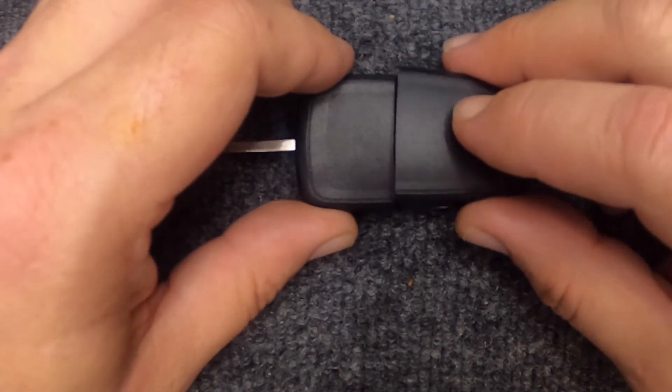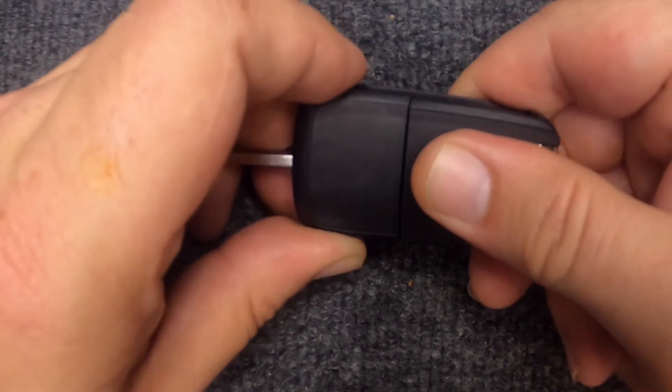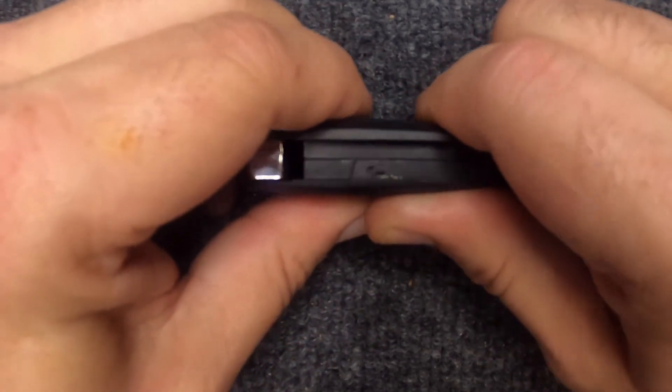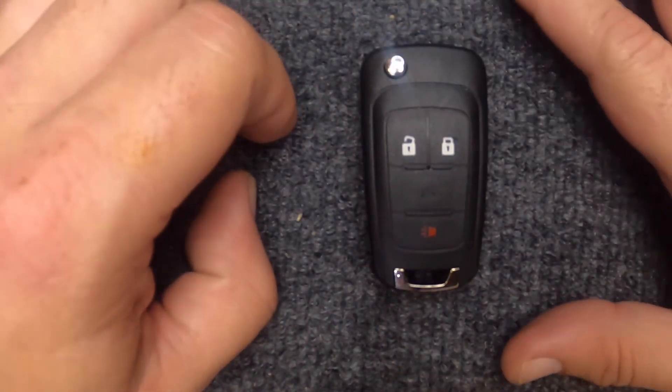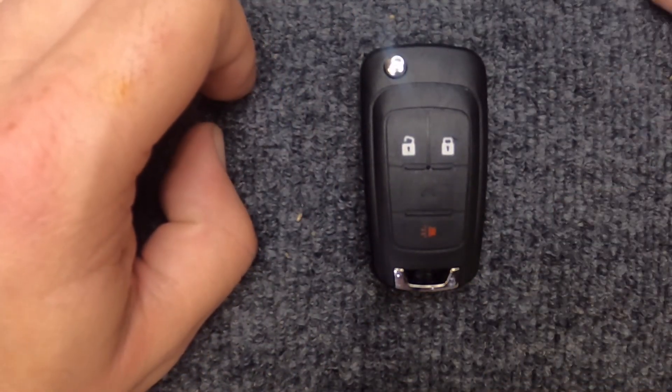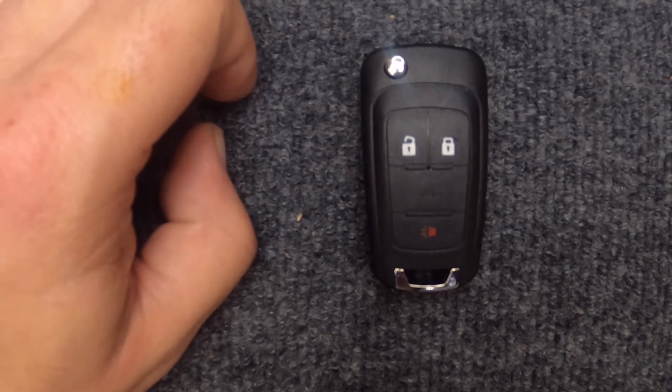Go ahead and take your two halves back together. We'll put the back half back on and gently squeeze the two together. Go ahead and put the flip key back in and there you go. You just changed the battery on your three-button flip key remote. Thanks for watching, Iron Locksmith.